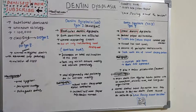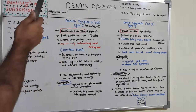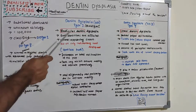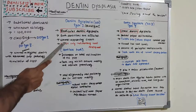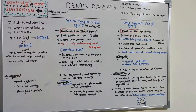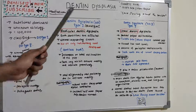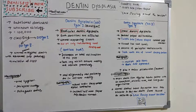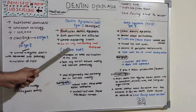Dentine dysplasia Type 1 is radicular dentine dysplasia, affecting the radicular dentine. It affects both the deciduous and permanent dentitions. The crown appears very normal, but the key problem is absent or only rudimentary root development — hence it is called radicular dentine dysplasia. The name itself gives a clue: root dentine formation is very minimal or may be entirely absent, and the condition is also known as 'rootless teeth.'